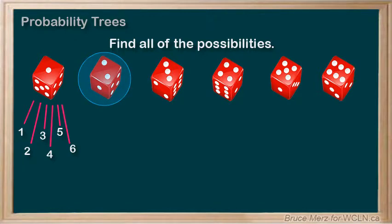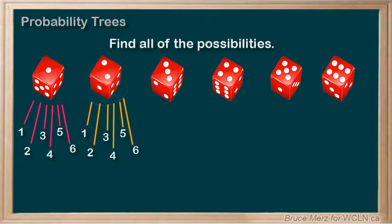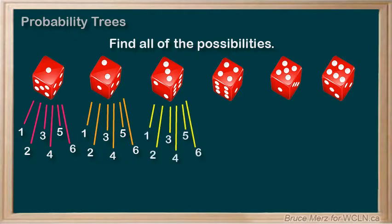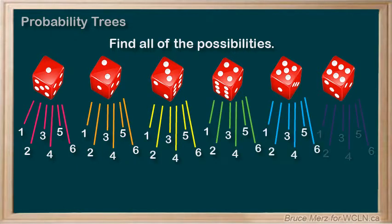And we can do this for every one of the first roll's options. And there it is, we've completed our probability tree. Nice.